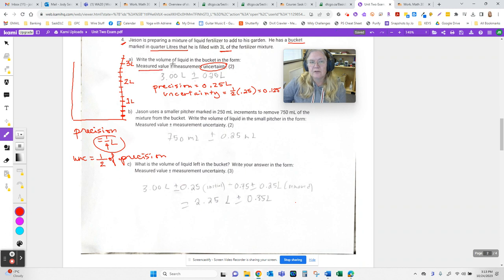So to write our measured value plus or minus, we're going to write three liters plus or minus 0.125, and that's what that should look like.